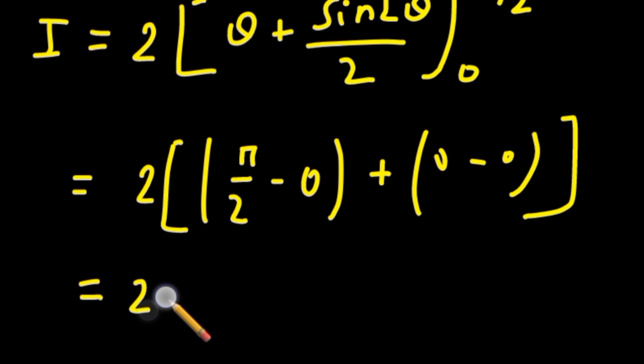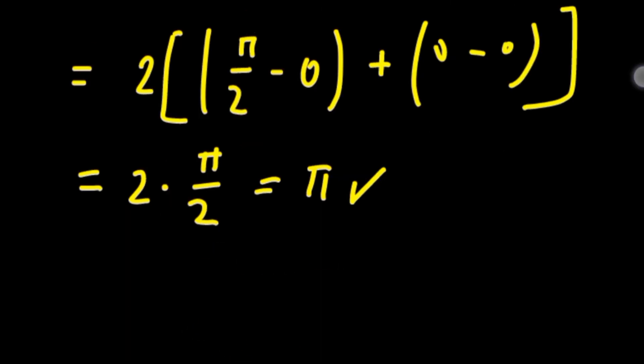In the next step, the twos cancel out making pi the answer. The Wi-Fi password is the first 10 digits of the answer, that is pi. Now remember the value of pi.